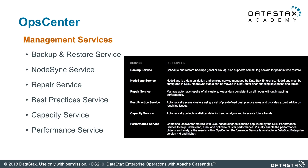These are the services that help you with routine tasks. Node Sync and Repair Service both target replica consistency. Repair Service is legacy, so the best practice is to use Node Sync — however, they can be used together; see the online documentation for details. The Best Practices section audits your cluster for the use of best practices and notifies you of violations and recommendations. Capacity Service helps with trend analysis by collecting statistical data and projecting future capacity and performance. Performance Service collects statistics and makes recommendations to improve performance.